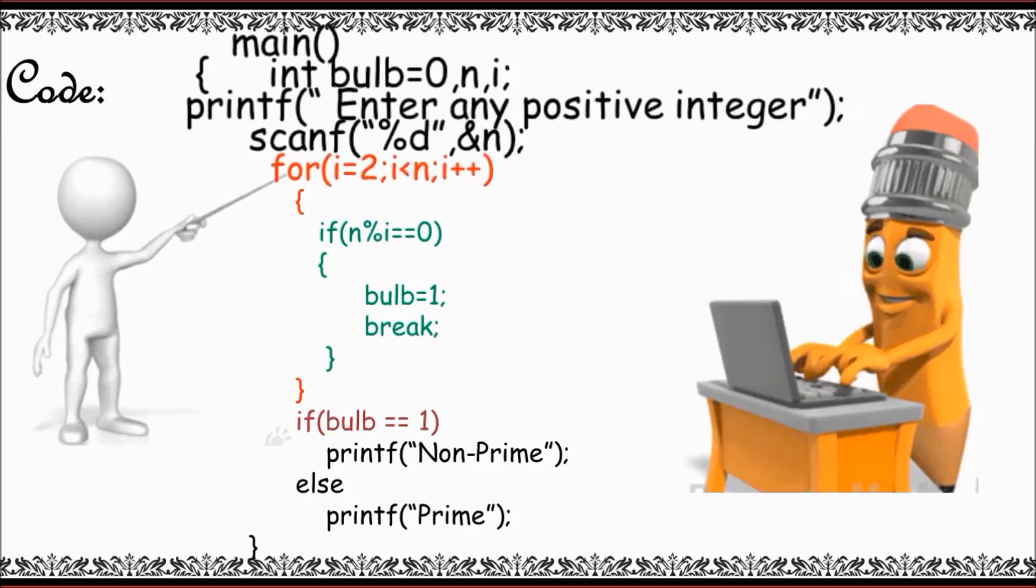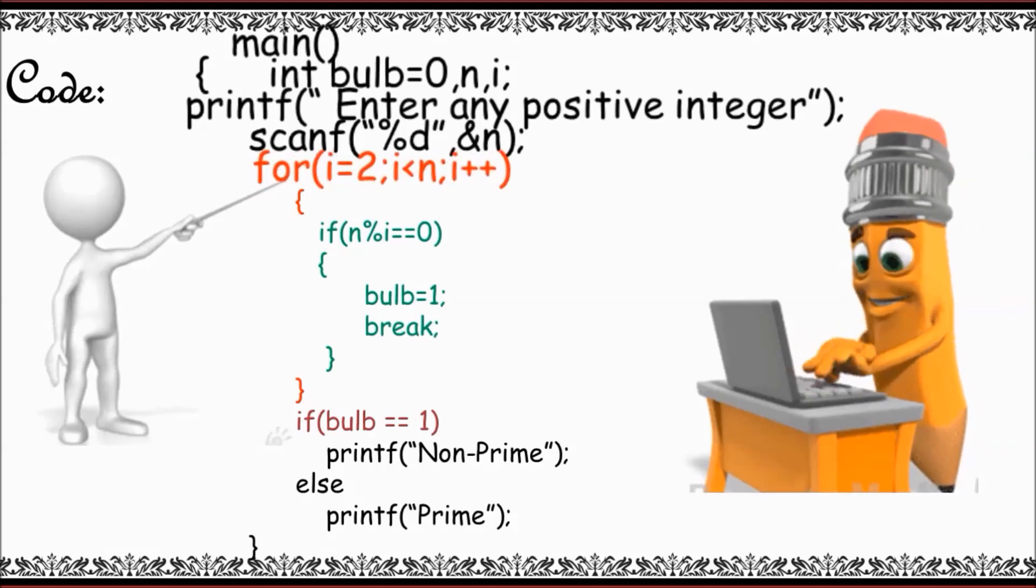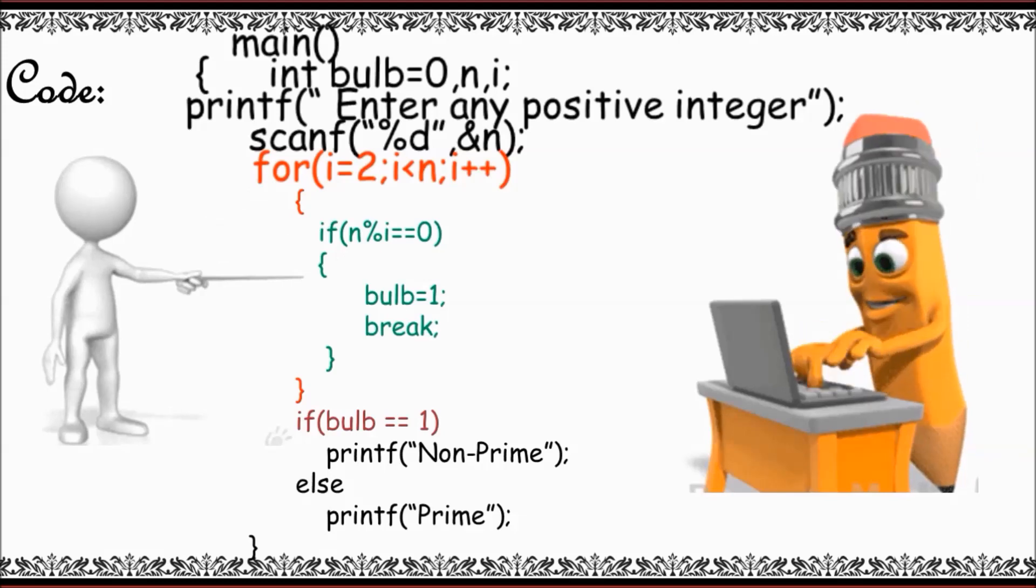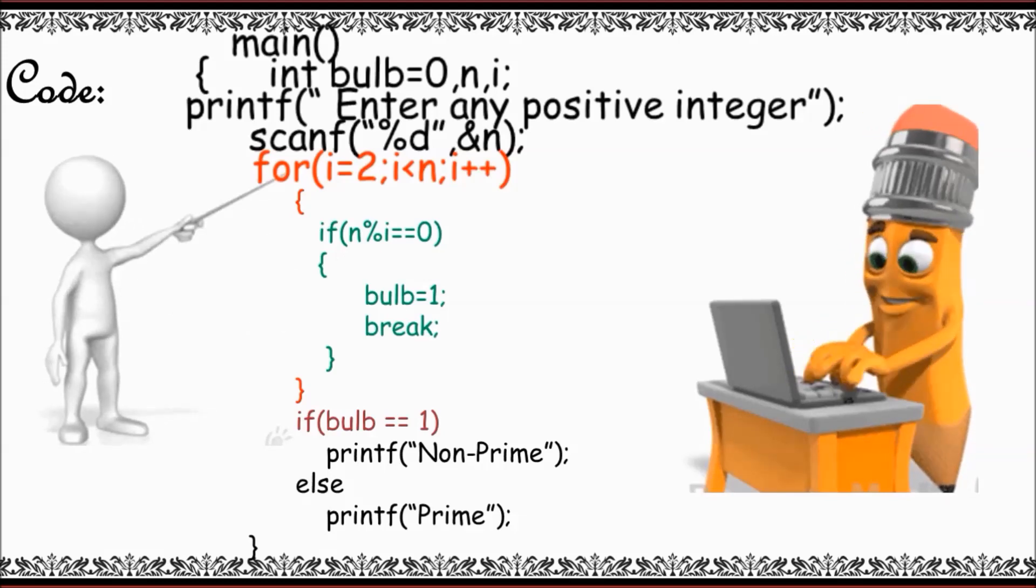I have started the loop from 2 to n minus 1. Hence, I am eliminating 1 and the number itself. In the next line, I'll be finding if the number is divisible with all the numbers from 2 to n minus 1.